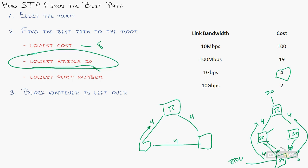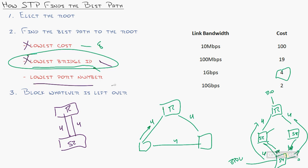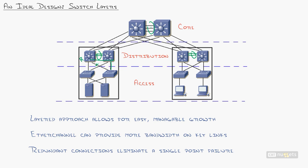What if the bridge ID is also tied? That happens when two ports on the same switch connect to the same upstream switch — both gigabit, cost of 4, same bridge ID. The tiebreaker is the lowest port ID — so fast Ethernet 0/1 wins over fast Ethernet 0/2. That port forwards and the other is blocked.